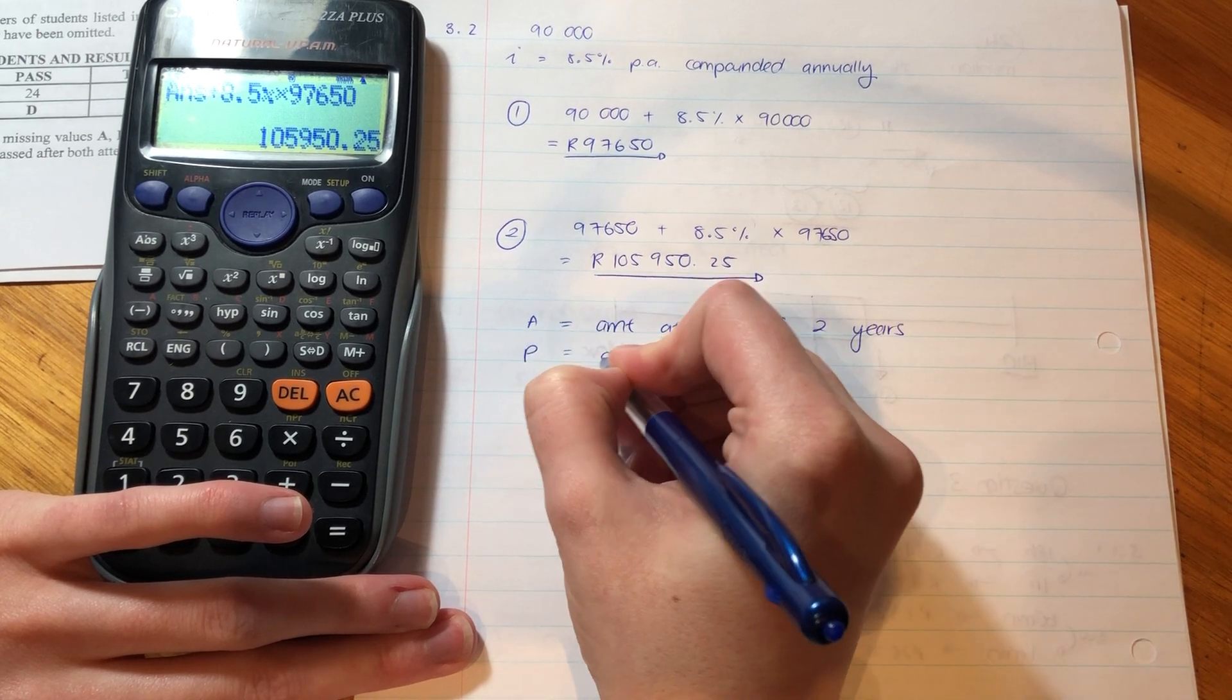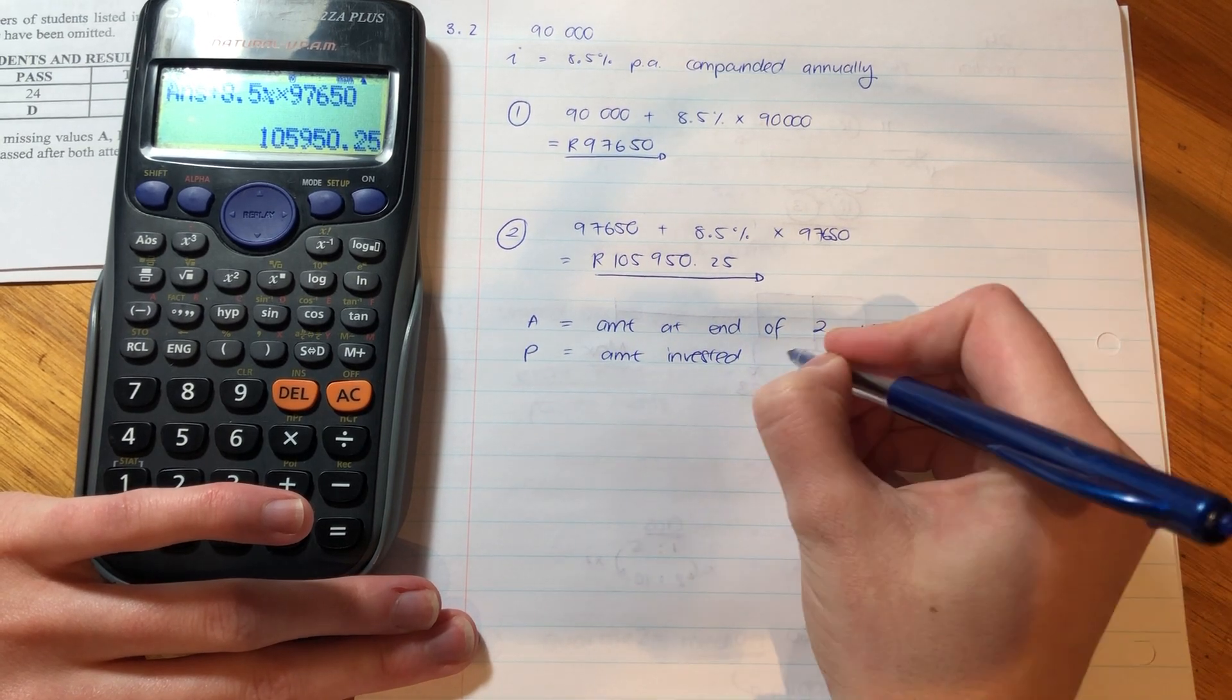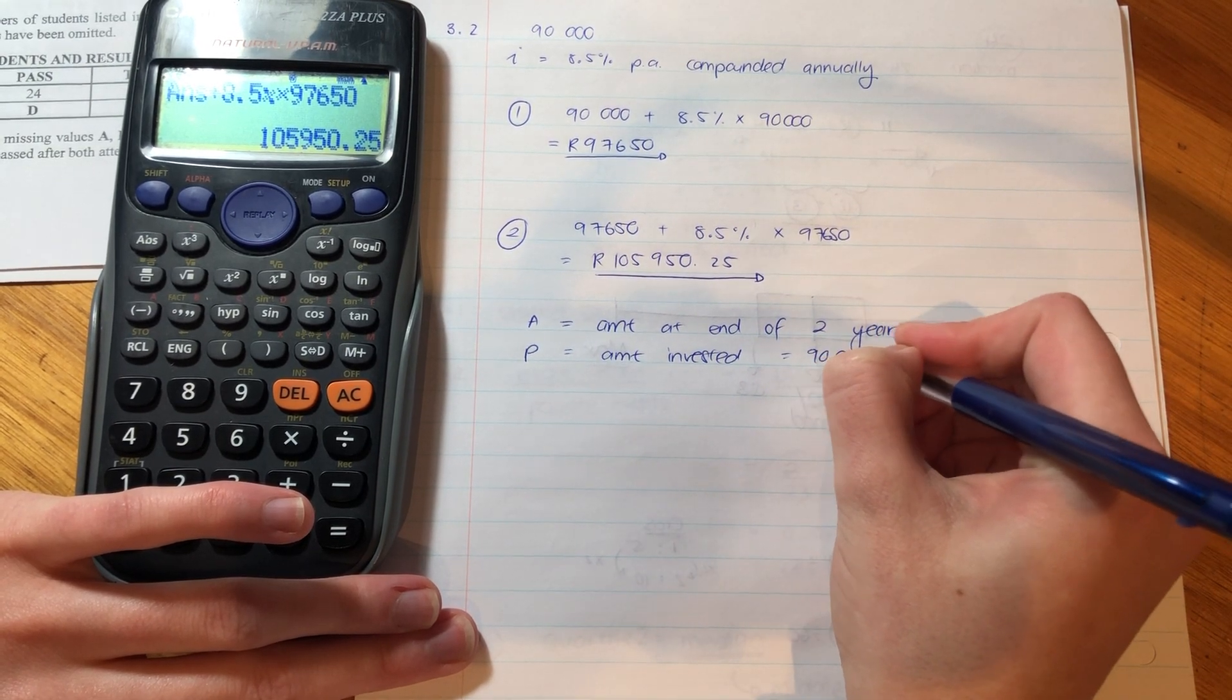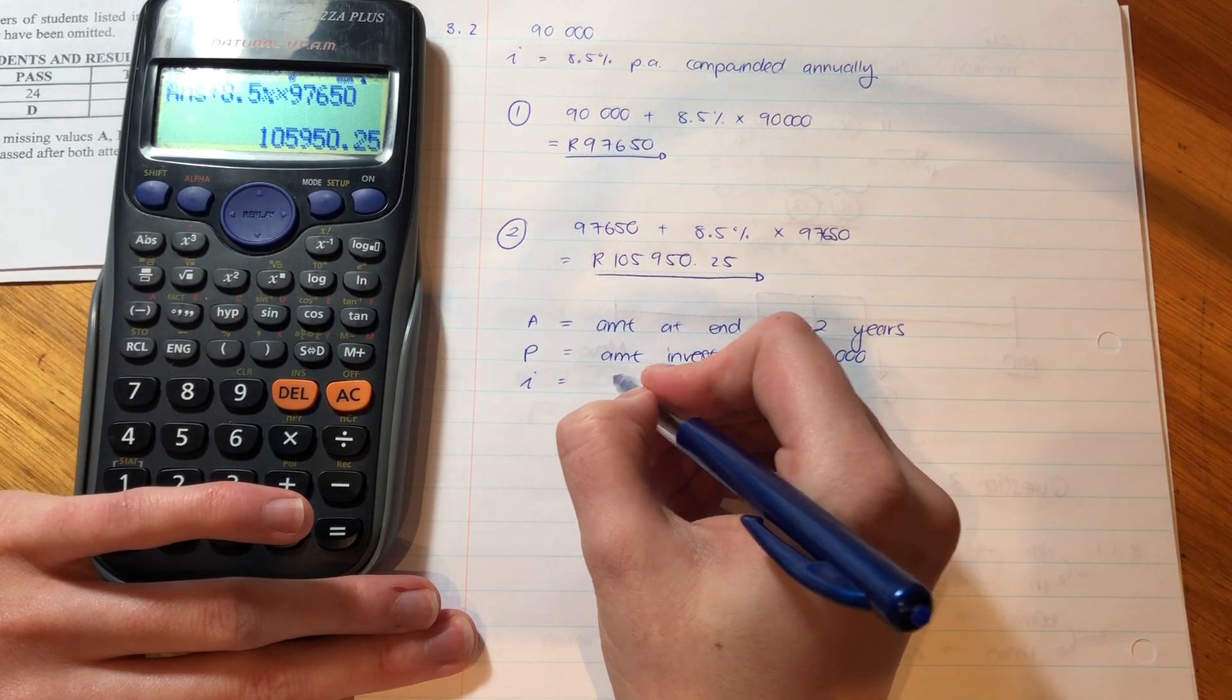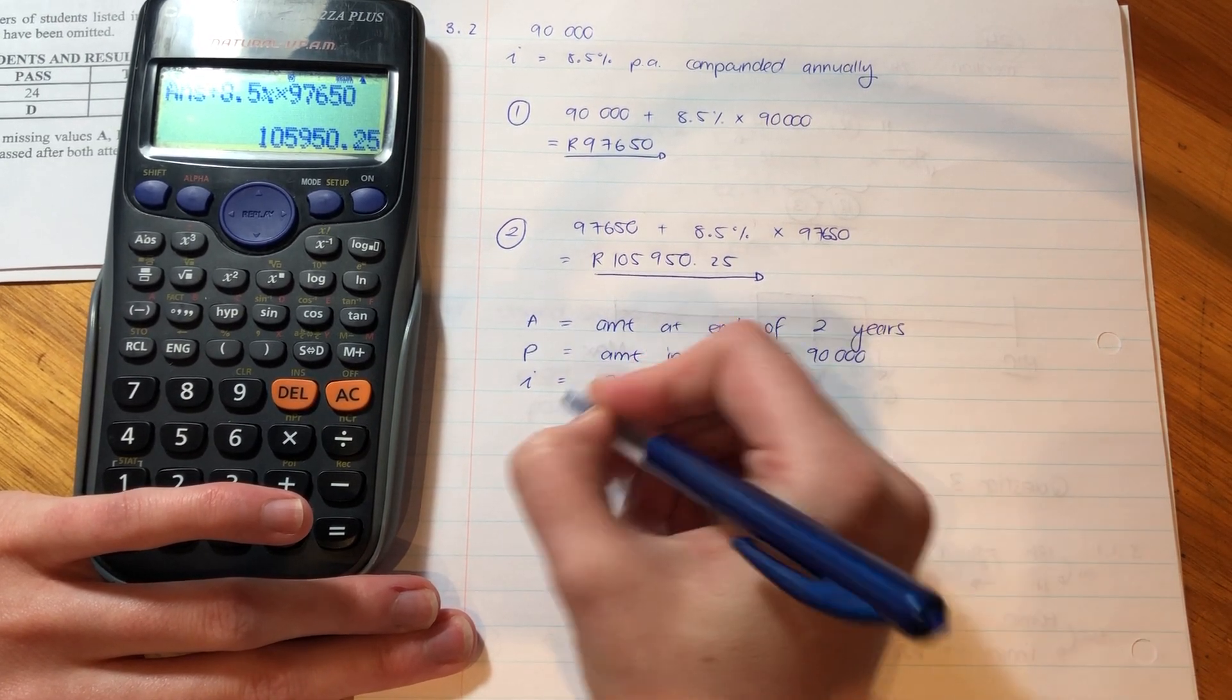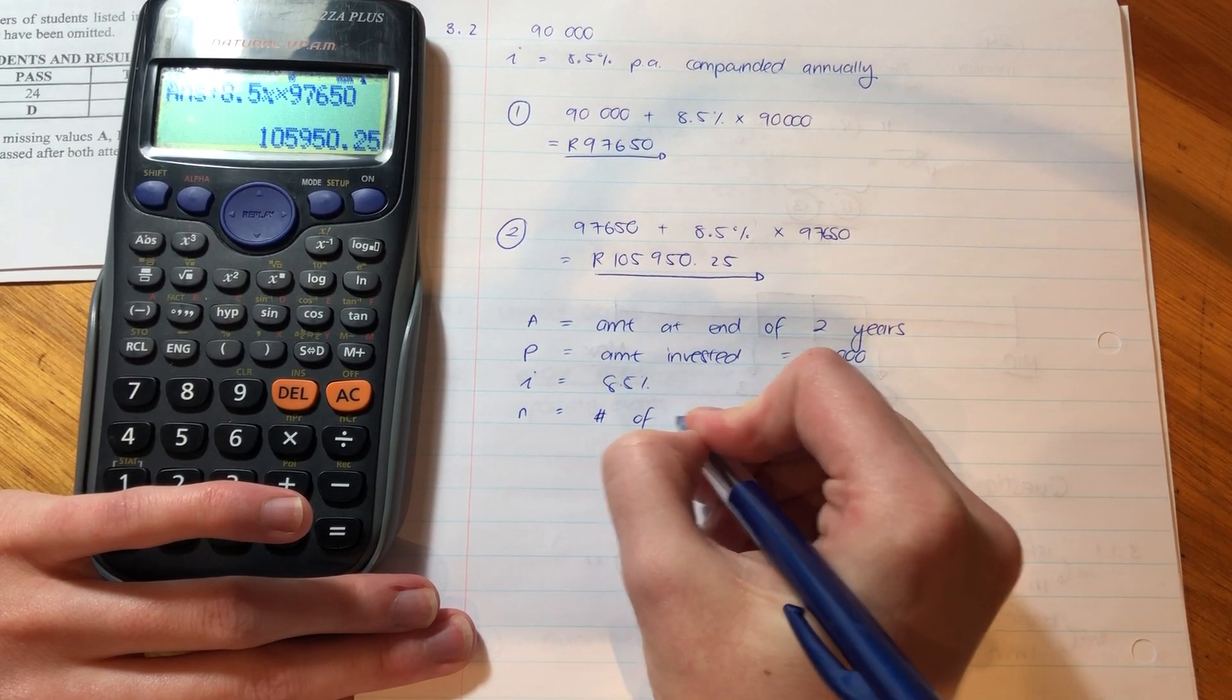P is the amount invested. So, that was the amount that he put in originally, which would be the 90,000. I is the interest rate, which was 8.5% up there. And then we have N, which basically says it's the number of years.